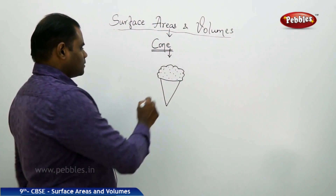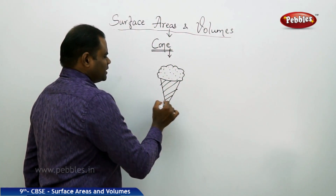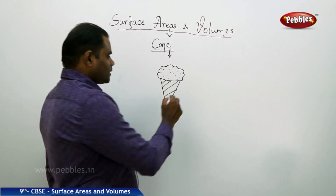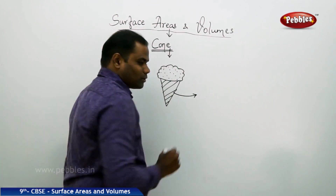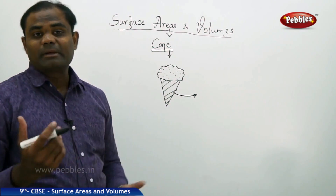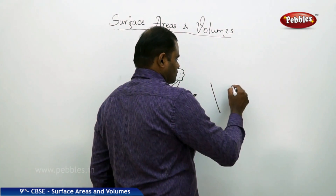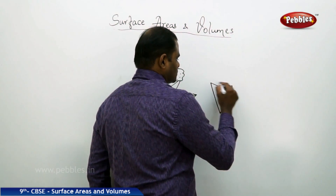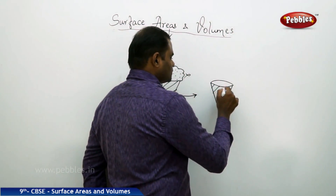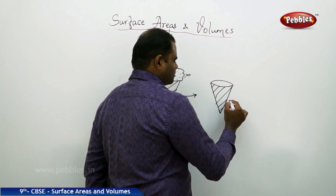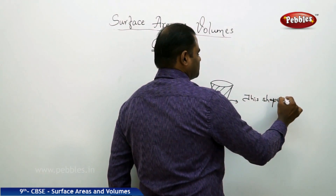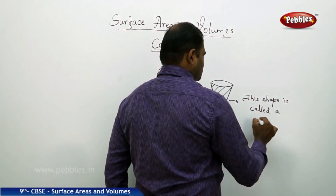We see the cream on top, but as we look at this shape, we clearly see it has a specific definition in mathematics. What we are talking about in a cone ice cream is nothing but what defines a cone in the mathematical sense. A cone without the cream would look like this, and such a shape is called a cone.